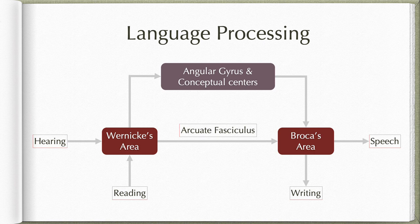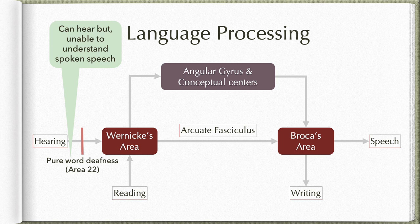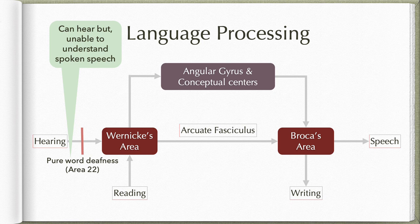If these many parts are involved in speech or language processing, things can go wrong at any of these pathways. If there is a lesion between the hearing area and Wernicke's area — that is, the connection between the auditory area and Wernicke's area — it results in what is known as pure word deafness. The lesion is usually in area 22, the higher association area for auditory function. The primary auditory areas 41 and 42 are intact, so the patient can hear, but is unable to understand spoken speech because information cannot be transferred to Wernicke's area.